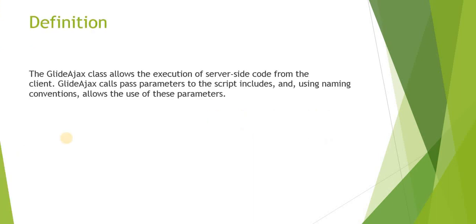What is the definition of Glide Ajax API? It is a class which allows execution of server-side code from the client. This is available on the client-side scripting and you can call the server-side code. For example, if you want to retrieve any value from the database through client-side scripting, this is the best way to do that. It happens usually when you don't know what kind of data will be required on the form at that point of time. This is one of the best practices in ServiceNow. You can also pass some parameters using naming conventions.